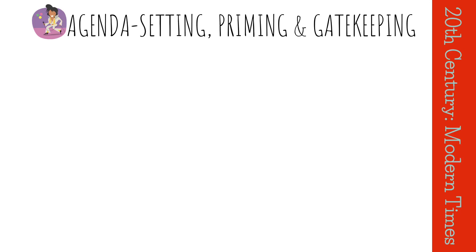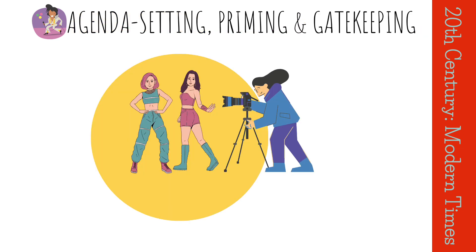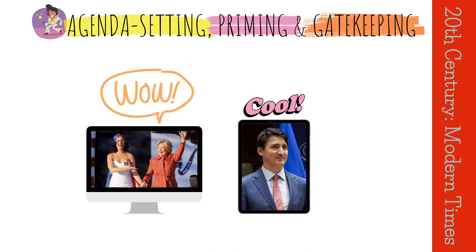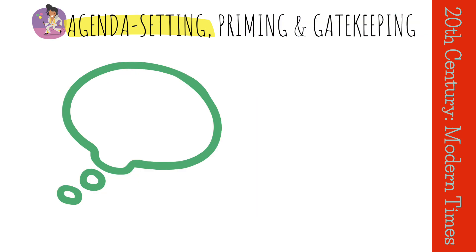Hello everyone and welcome to this video on agenda setting theory, priming theory, and gatekeeping theory. In the previous video we talked about how mass media can influence our cognitive shortcuts. Today we will discuss these three specific theories in more detail and explore the different ways in which the media can influence our thoughts and opinions.